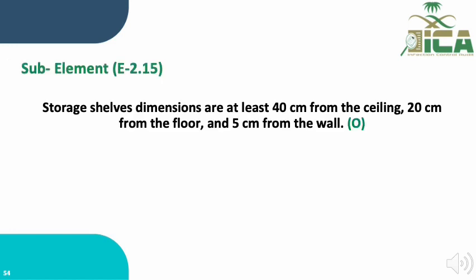Sub-element E.2.15 states that storage shelf dimensions must be at least 40 centimeters from the ceiling, 20 centimeters from the floor, and 5 centimeters from the wall. This sub-element is evaluated through observation — we go directly to the storage area, check the dimensions, and score the sub-element based on our findings.